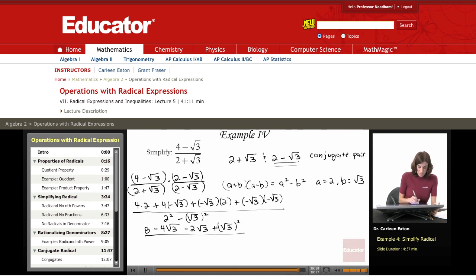All divided by 2 times, 2 squared is 4 minus, well, the square root of 3 squared is just 3. So this gives me 8 minus 4 square root of 3 minus 2 square root of 3. Well, this square root of 3 squared is also 3, so I'm going to change that to a 3, divided by 4 minus 3, which is 1.